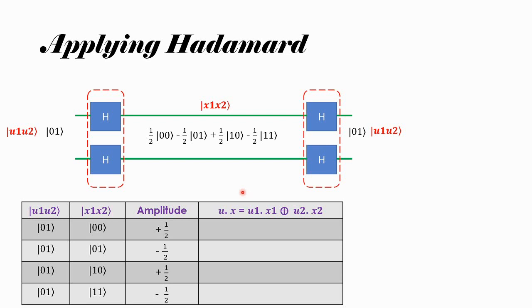Let us look at that amplitude a bit more closely. Let me call this input |01⟩ as u1, u2, and whatever output comes here as x1, x2. So u1, u2 is a constant — it is 0, 1 because this is not changing. The output x can be |00⟩, |01⟩, |10⟩, or |11⟩ because it is in superposition. The amplitudes are: |00⟩ → 1/2, |01⟩ → −1/2, |10⟩ → 1/2, |11⟩ → −1/2.